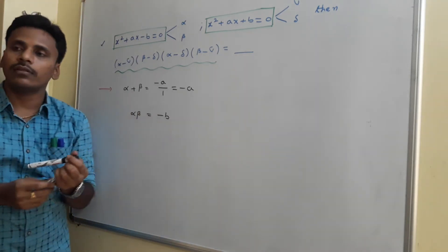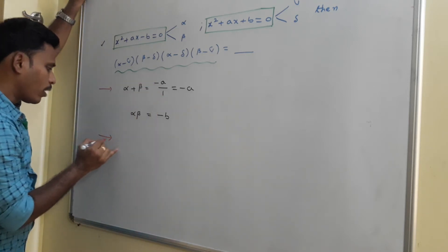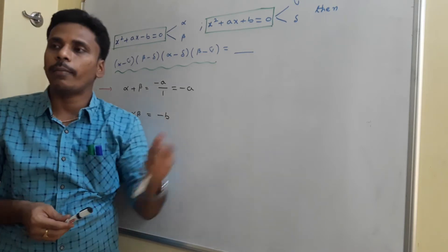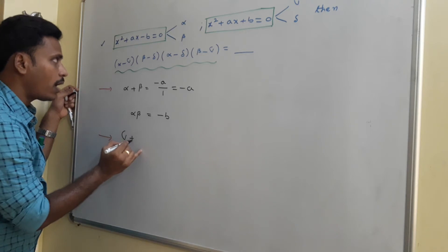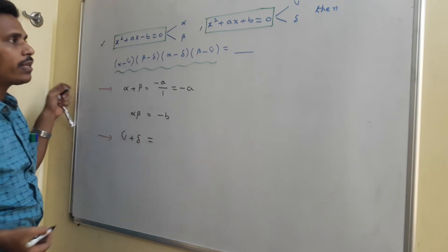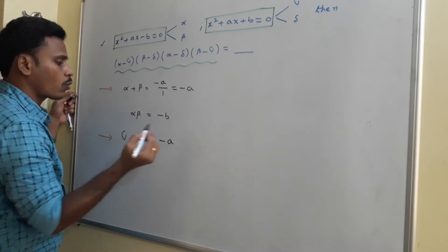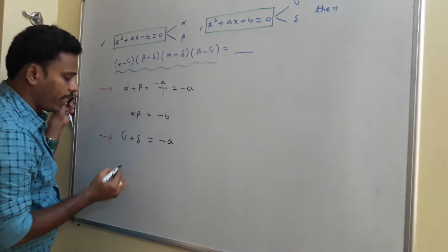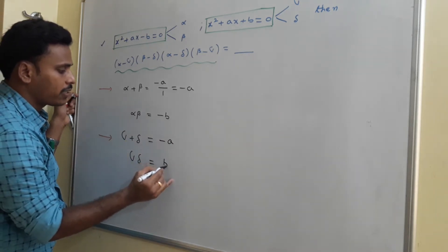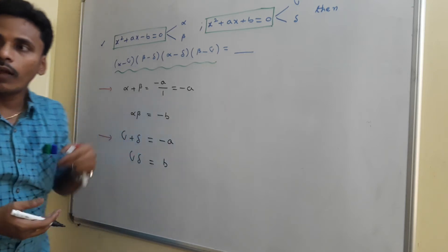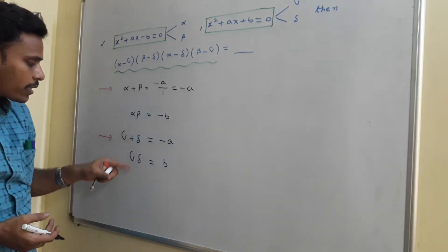From the first equation, since alpha and beta are the roots, we have alpha+beta = minus a and alpha·beta = minus b. For the second equation with roots gamma and delta: gamma plus delta = minus a (same x coefficient), and gamma times delta equals b (the constant term).